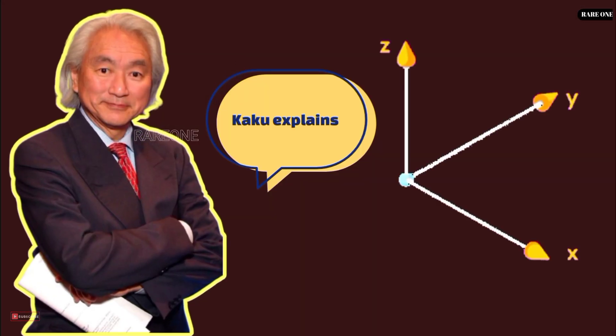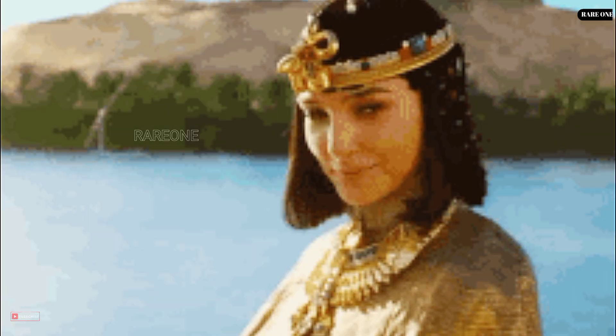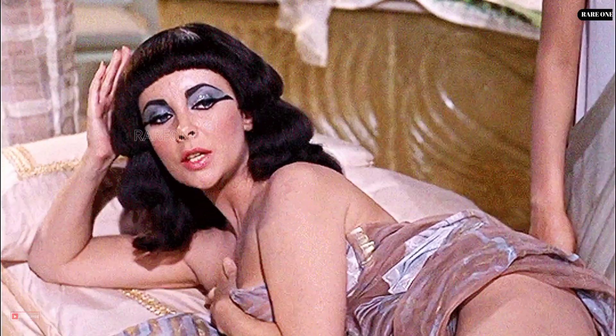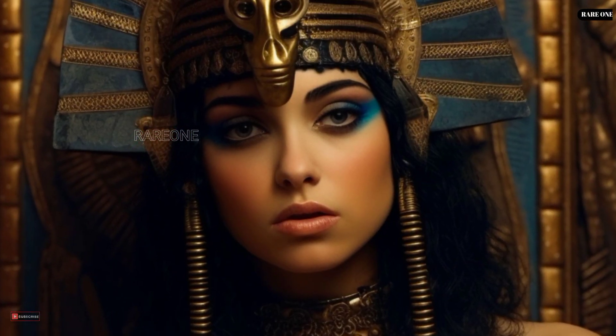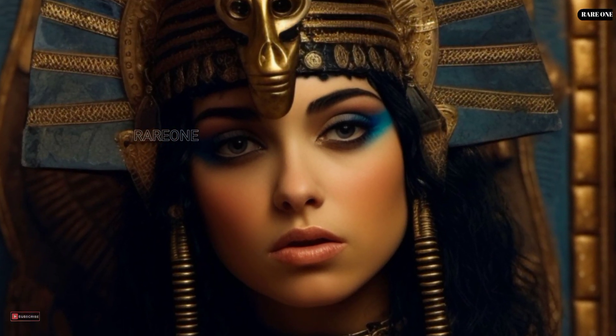Kaku uses a clever analogy to explain this. Imagine someone claims they were Cleopatra in a past life. No matter how much historical evidence you throw at them, they could always say, well, the history books are wrong. It's impossible to disprove.